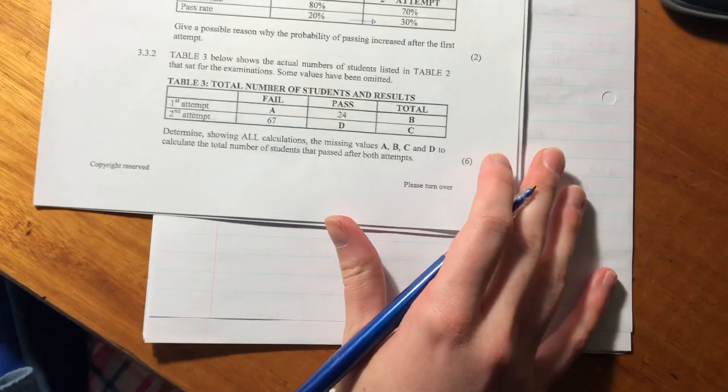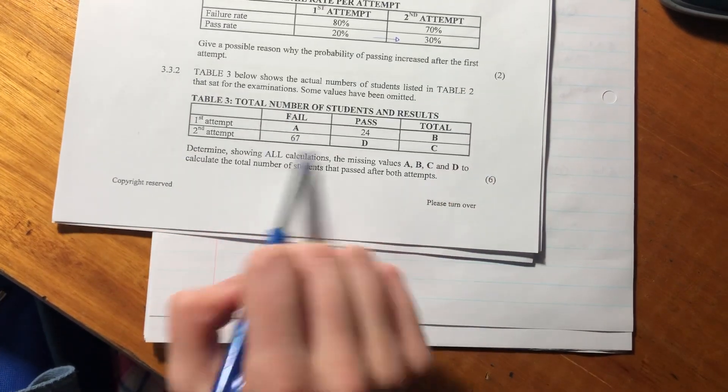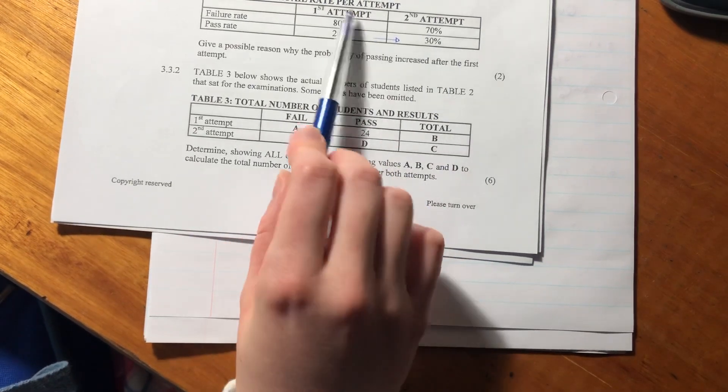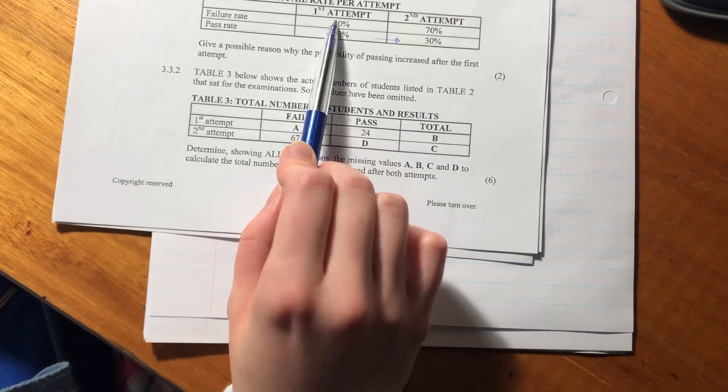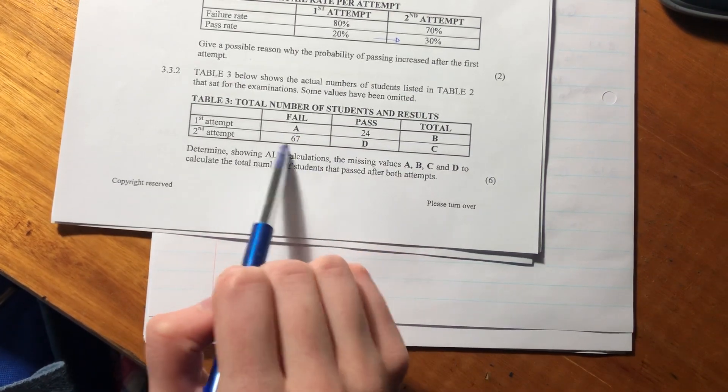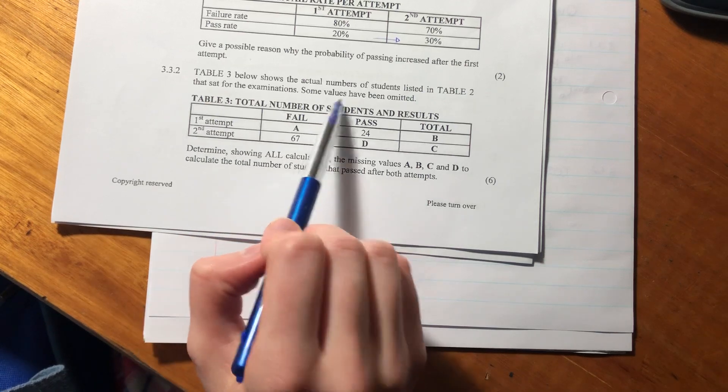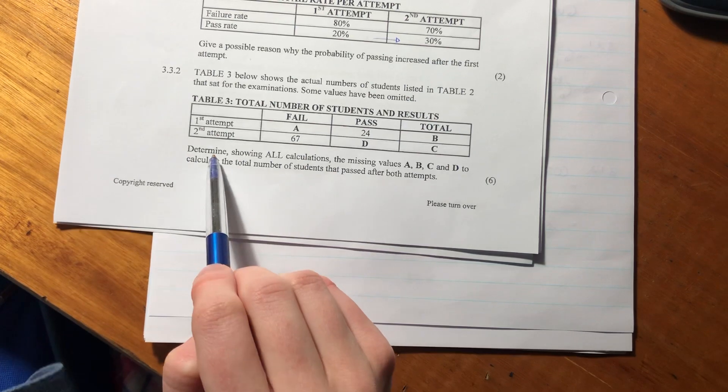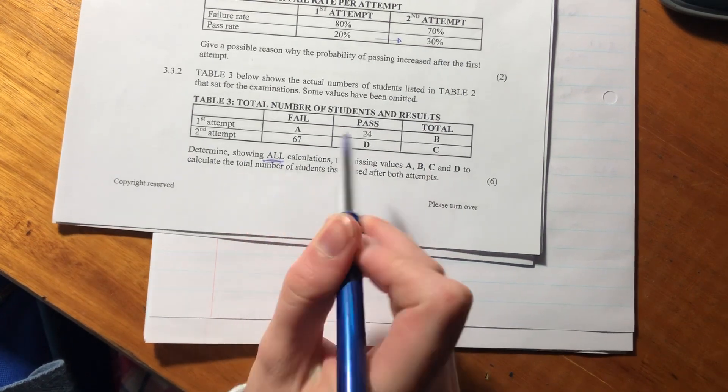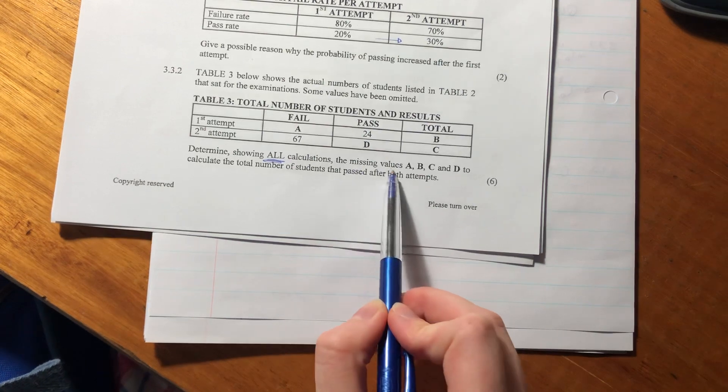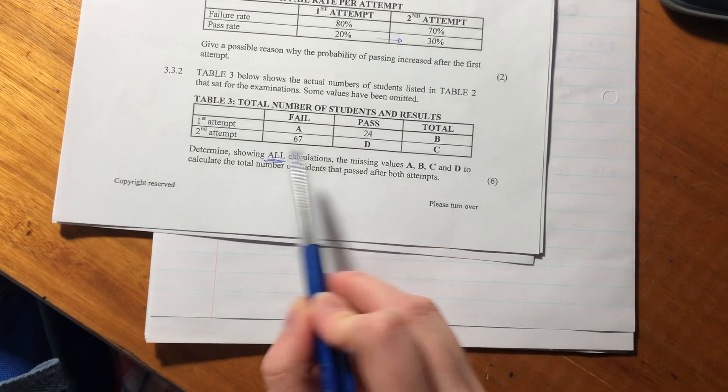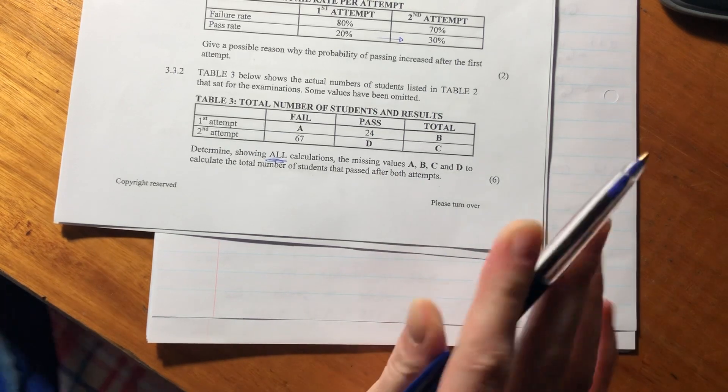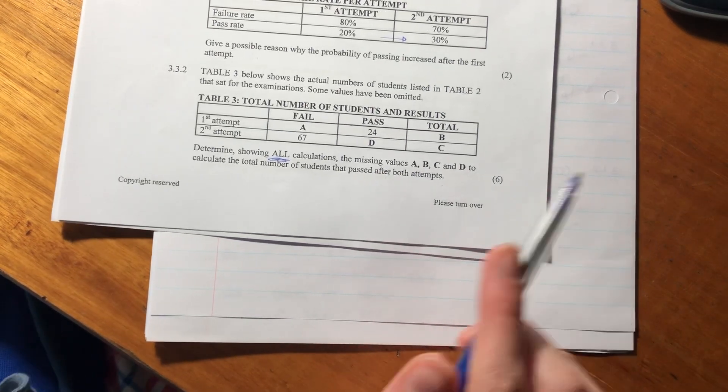Table 3 shows the actual numbers of students listed in Table 2. Remember, Table 2 gives us the percentage, but Table 3 gives us the absolute numbers, the actual number of students. Some values have been omitted - A, B, C, and D. Determine, showing all calculations, the missing values to calculate the total number of students that passed after both attempts.